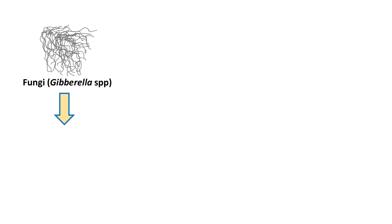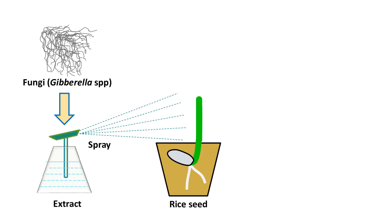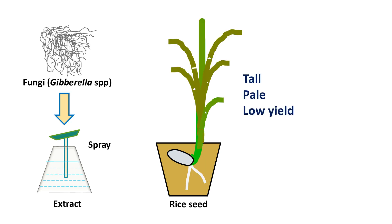In the next experiment, they took the fungal extract and sprayed it on the rice plants. The effects observed after spraying were similar to the previous experiment — the rice plants became tall, pale and gave less yield.